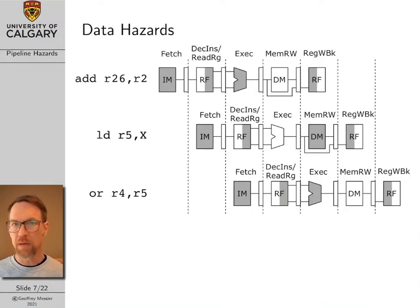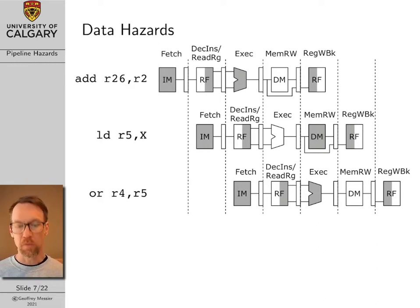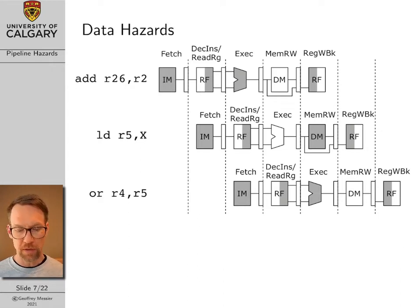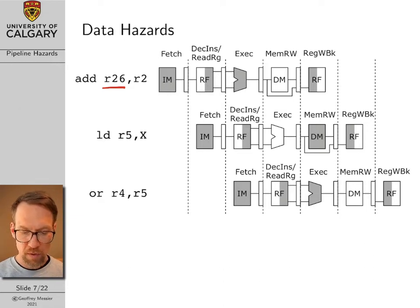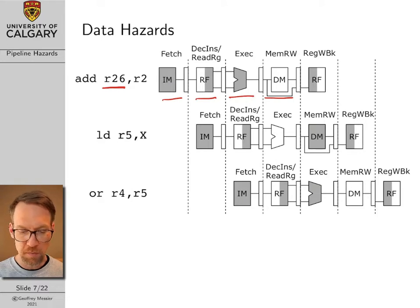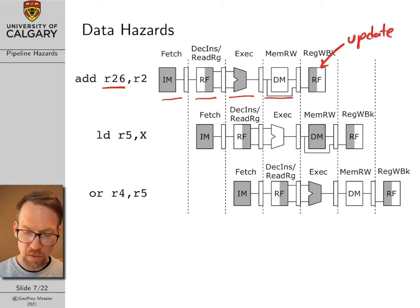Here's another pipeline timeline diagram with three assembly language instructions that have a lot of interdependency. This is the one common example I'll use throughout the lecture to illustrate stalling, forwarding, and the combination. The first command is an add command that modifies register 26. Following through the timeline: we fetch the instruction, read the registers, do our addition, have a blank time for memory access since this command doesn't use memory, and then this is where we update register 26.